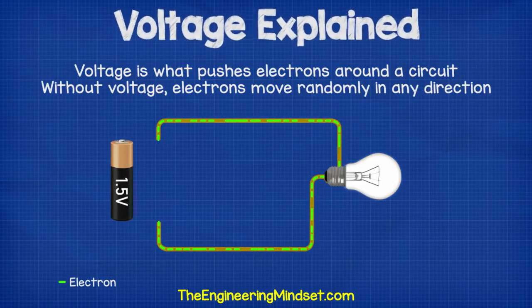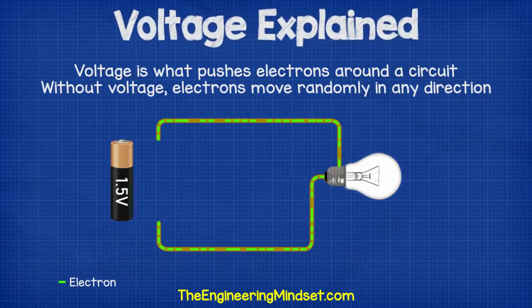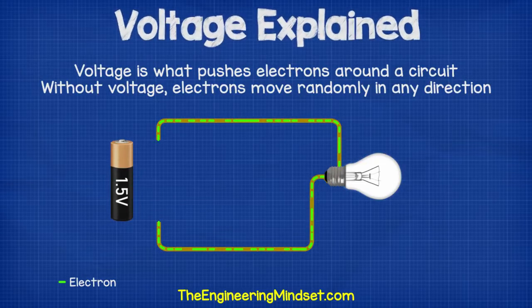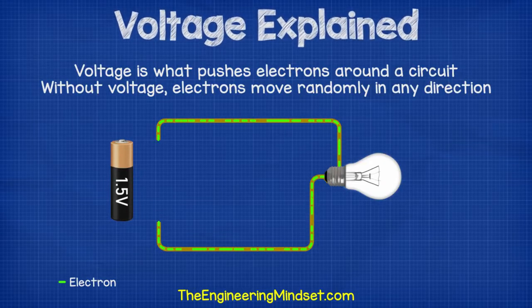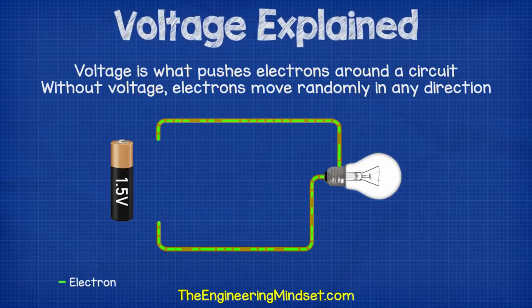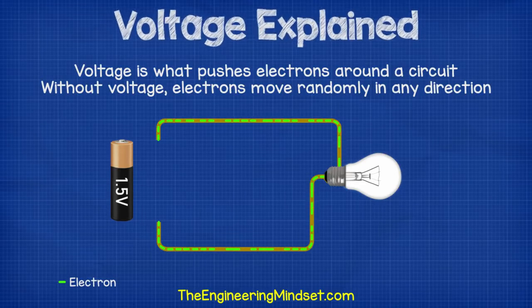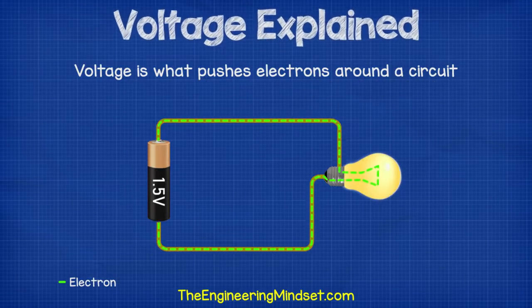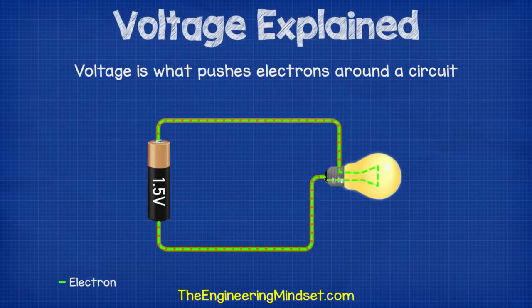Remember that without a voltage, the free electrons will move around between atoms, but they move around randomly, and this is not what we want. So if we want them to move in a certain direction, we need a voltage.